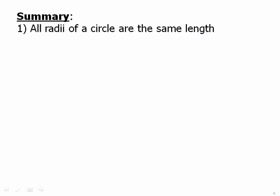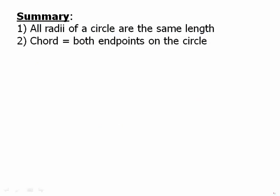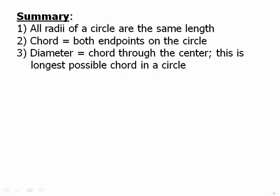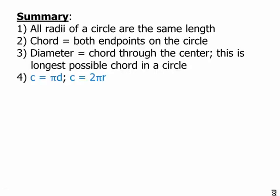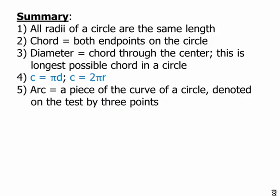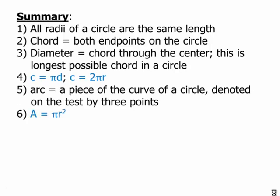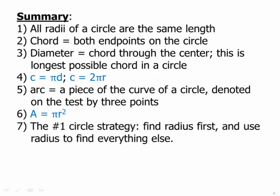In summary, all radii of a circle are the same length. A chord is a segment that has both endpoints on the circle. A diameter is a chord through the center. This is the longest possible chord in a circle. The diameter equals 2R, so we can express the circumference either as pi D or as circumference equals 2 pi R. An arc is a piece of the curve of a circle denoted on the test by three points. Area equals pi r squared. And the number one circle strategy is find the radius first and use the radius to find everything else.